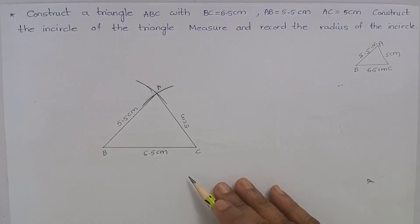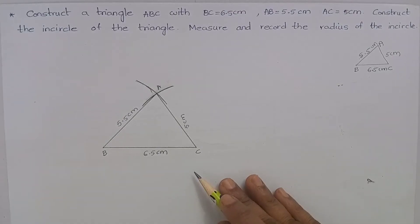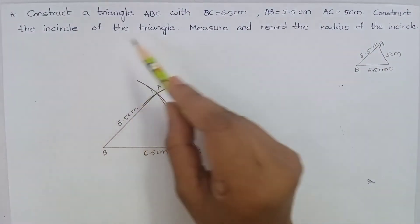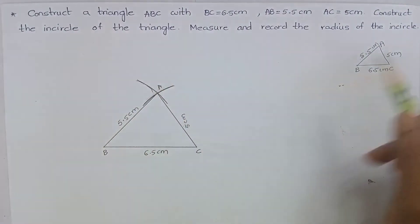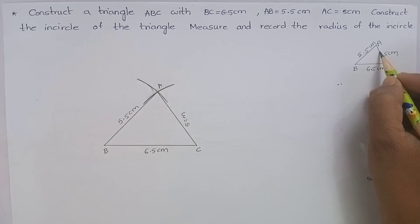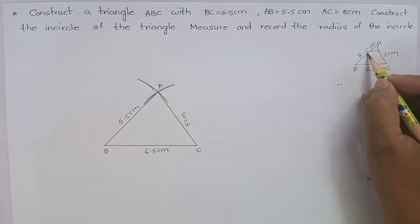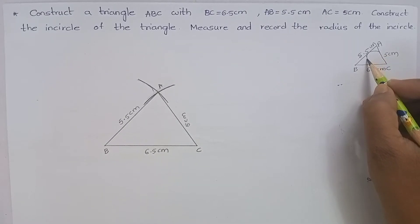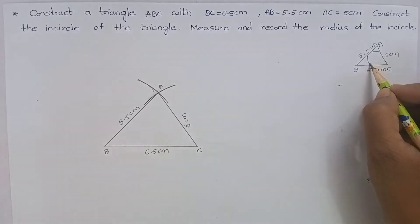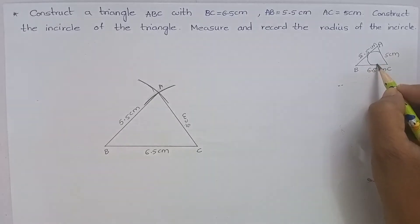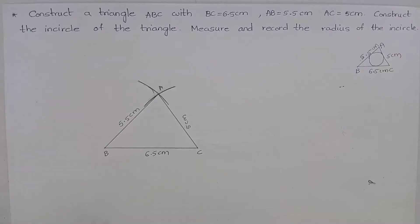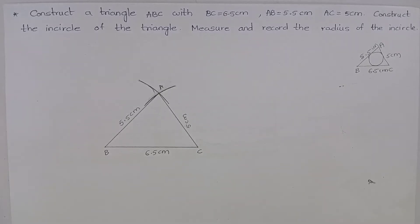We have constructed a triangle. Now, construct the incircle of the triangle. This means we have to construct a circle inside the triangle which touches all three sides. To do this, we have to take the angle bisector of any two angles.